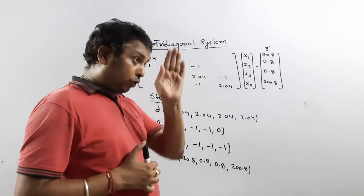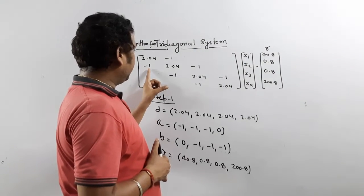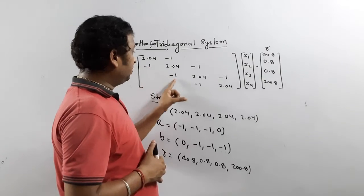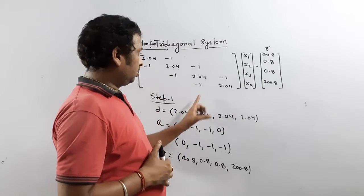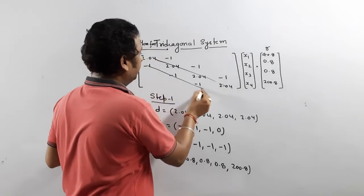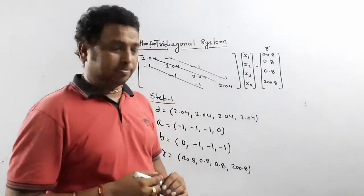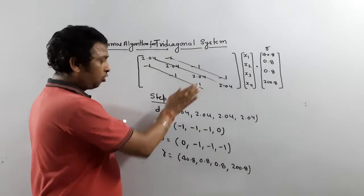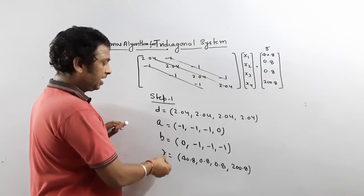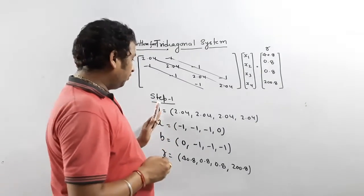For the upper diagonal A: always start from A1, A2, A3, and if it is a 4x4 matrix the last entry A4 is always 0. For the lower diagonal B: the starting value is always 0, so B1 = 0, then B2, B3, B4. Once you know all the D, A, B, and R values, step 1 is complete and all these values are very important.